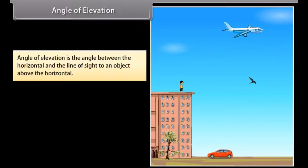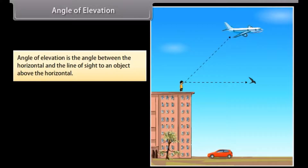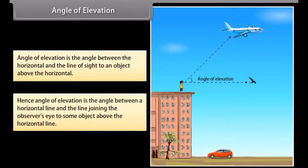Let us take an example to understand this. In this picture, an observer is standing at the top of a building and looking straight ahead at the birds which are in the horizontal line. The observer must raise his eyes to see the airplane which is in the slanting line. This line is also called the line of sight. The angle formed between the two lines is called the angle of elevation. Hence, angle of elevation is the angle between a horizontal line and the line joining the observer's eye to some object above the horizontal line.